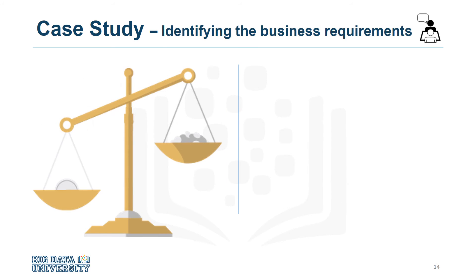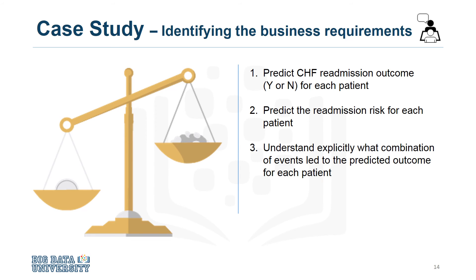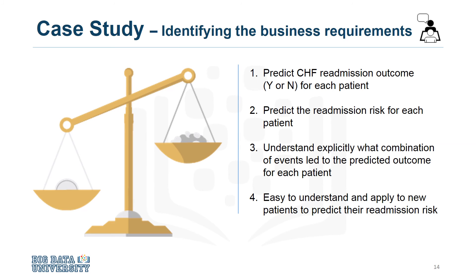Finally, four business requirements were identified for whatever model would be built: predicting readmission outcomes for those patients with congestive heart failure, predicting readmission risk, understanding the combination of events that led to the predicted outcome, and applying an easy-to-understand process to new patients regarding their readmission risk.